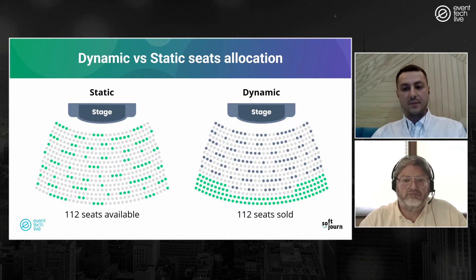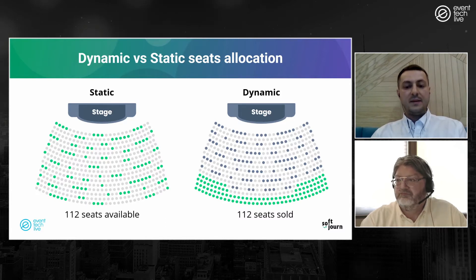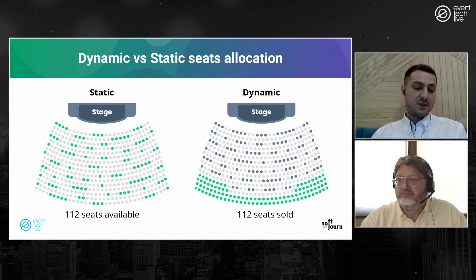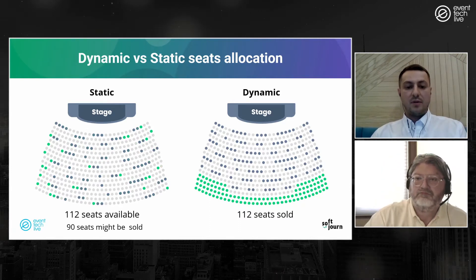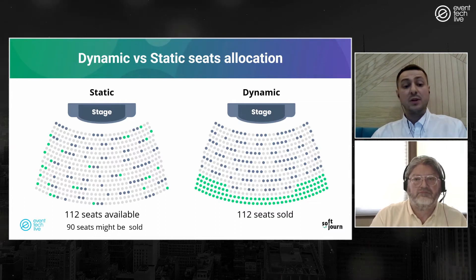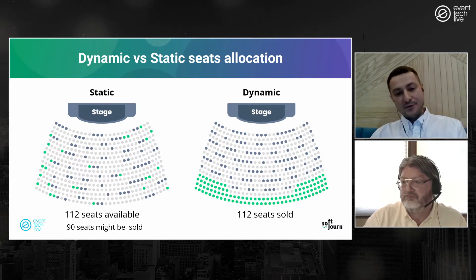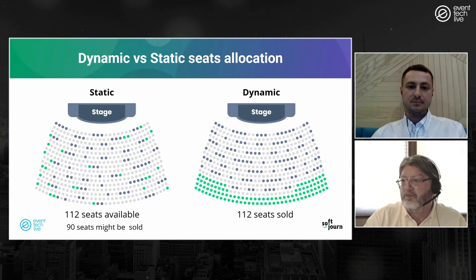Now let's look at the side-by-side comparison of static versus dynamic methods. With an equal number of seats on each side, we have more inventory remaining on the dynamic side due to more efficient capacity utilization — and that's assuming all seats defined in the static plan are sold. In practice, some seats on the static side may not be purchased or purchased only partially, causing additional revenue loss for the event organizer.